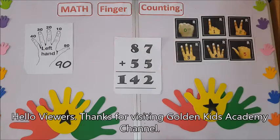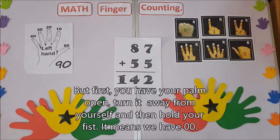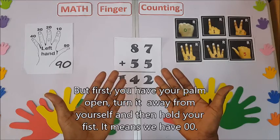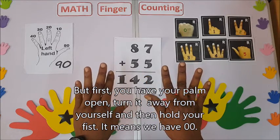Hello viewers, thanks for visiting Golden Case Academy channel. Today we're going to learn how to sum up 87 and 55. But first, you have your palm open, turn it away from yourself, and then hold your fist. It means you have zero.